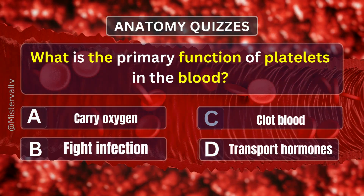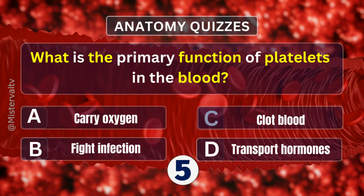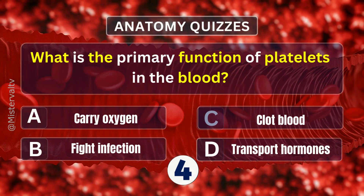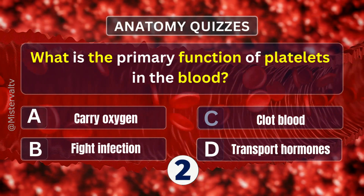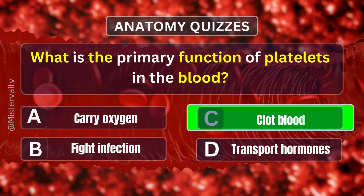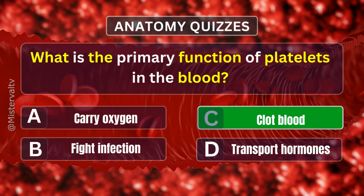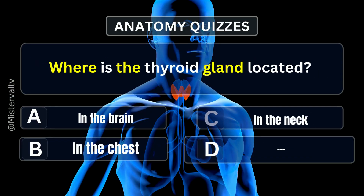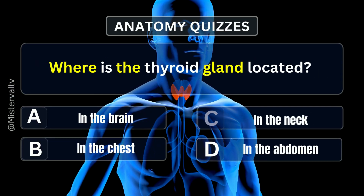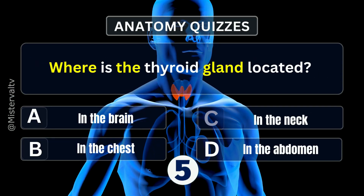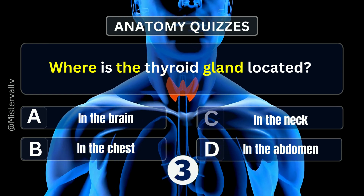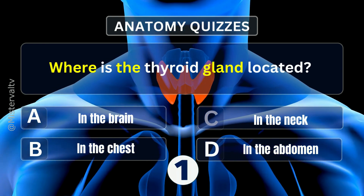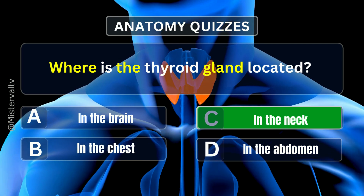What is the primary function of platelets in the blood? Answer. C. Clot blood. Where is the thyroid gland located? Answer. C. In the neck.